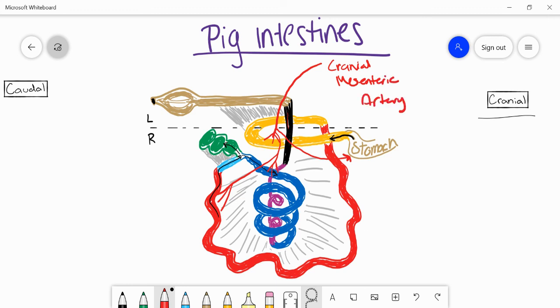There is also a caudal mesenteric artery when we have a cranial like that. The caudal mesenteric artery is a little more limited in what it's supplying as far as the intestines are concerned, but the caudal mesenteric artery is supplying mainly the descending colon. So this here is the caudal mesenteric artery. And that's the blood supply.